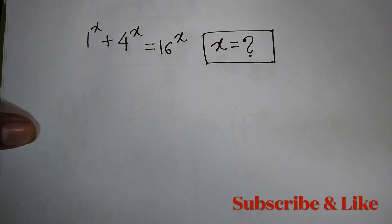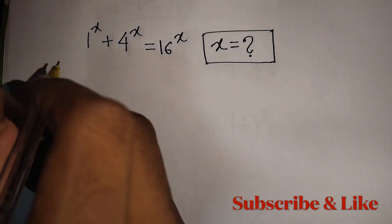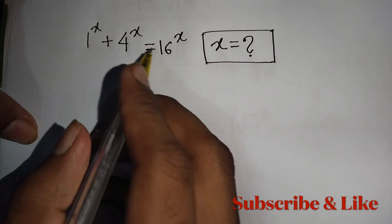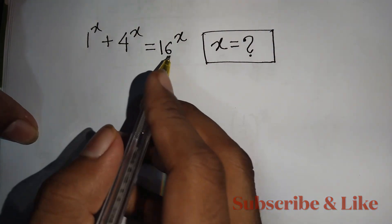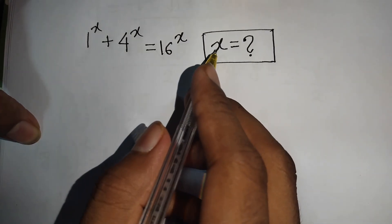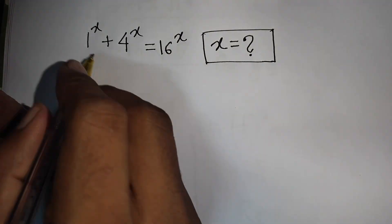How to solve 1 to the power x plus 4 to the power x is equal to 16 to the power x. What is the value of x?